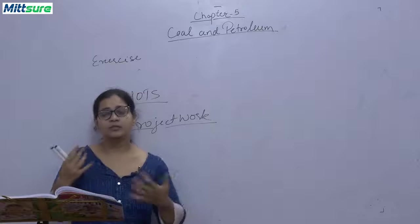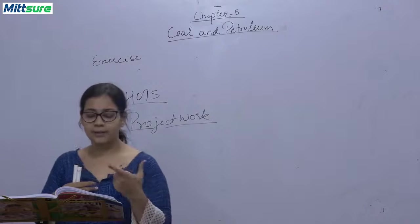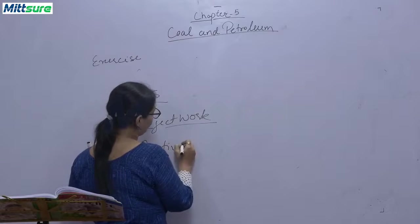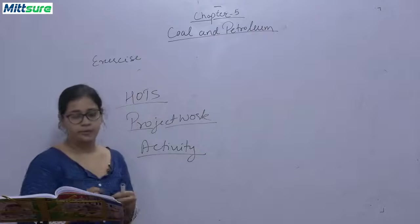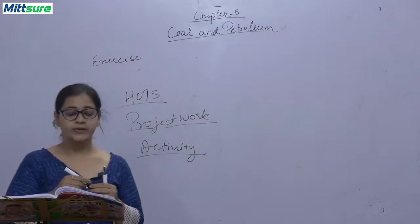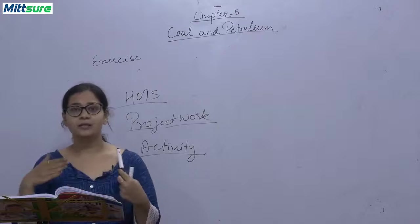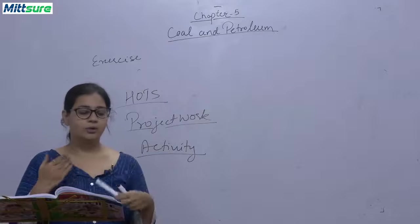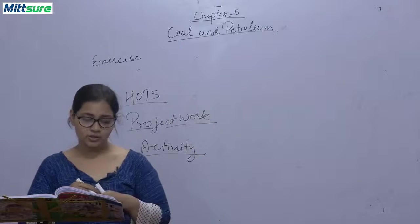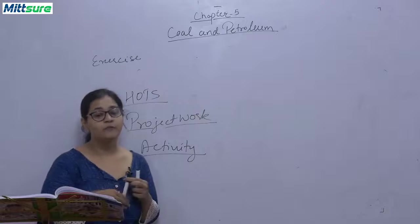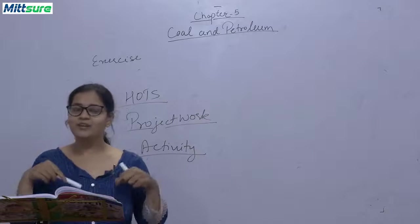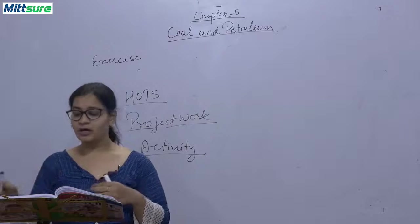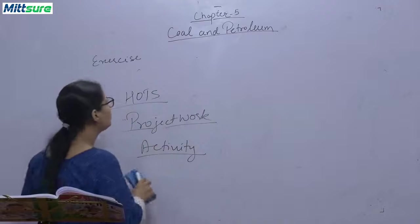Next is activity. Prepare a report on alternative source of energy, that is solar energy, nuclear energy, tidal energy. You know tides in oceans create energy. And wind energy. You can use books, magazines or internet to collect information. I'm going to tell you about Joseph Priestley. He was an English scientist and he discovered oxygen in 1774, which is essential for respiration and combustion. That is all for the chapter coal and petroleum.